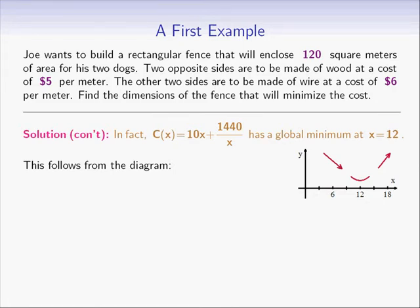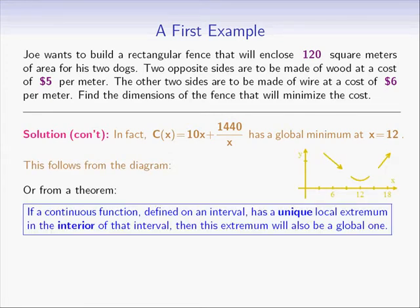More formally, the following theorem can be used: if a continuous function defined on an interval has a unique local extremum in the interior of that interval, then this extremum will also be a global one. Our function has a unique extremum at x equals 12, and therefore it must be a global one.